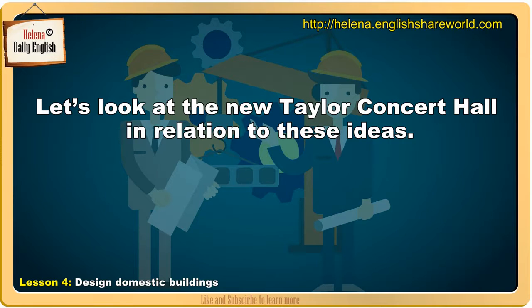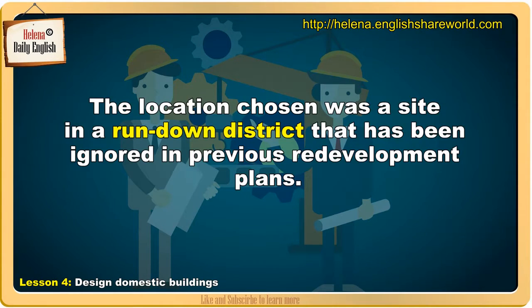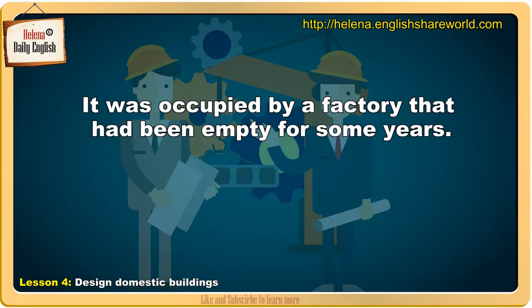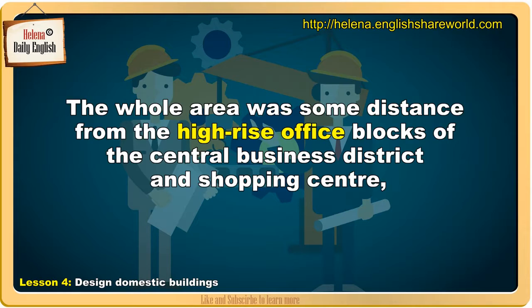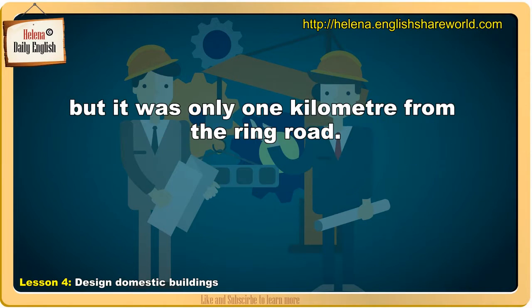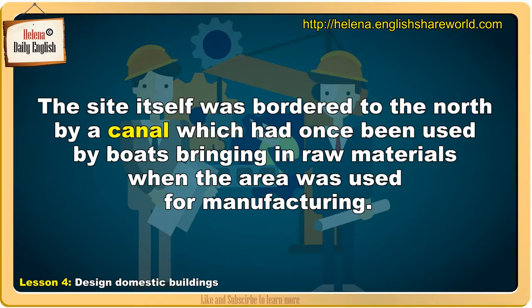Let's look at the new Taylor Concert Hall in relation to these ideas. The location chosen was a site in a run-down district that had been ignored in previous redevelopment plans. It was occupied by a factory that had been empty for some years. The whole area was some distance from the high-rise office blocks of the central business district and shopping centre, but it was only one kilometre from the ring road. The site itself was bordered to the north by a canal, which had once been used by boats bringing in raw materials when the area was used for manufacturing.